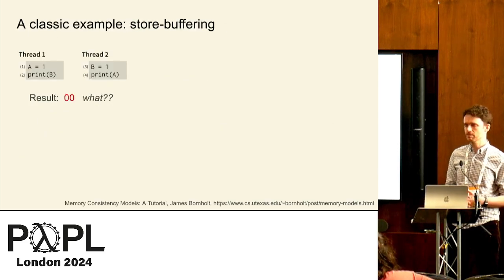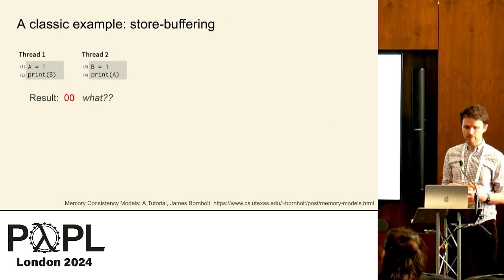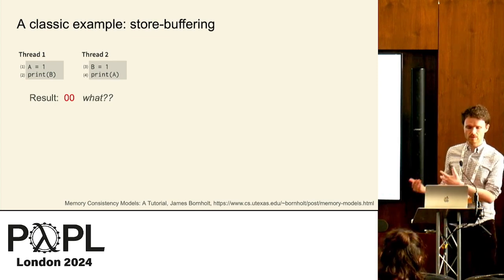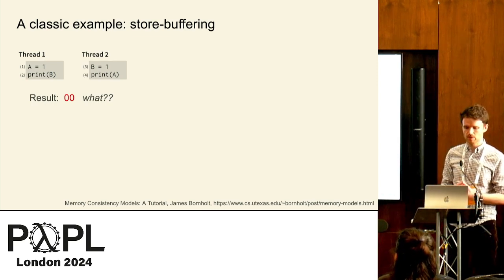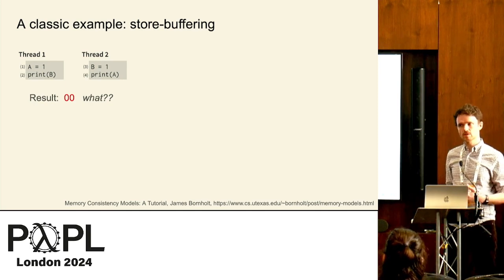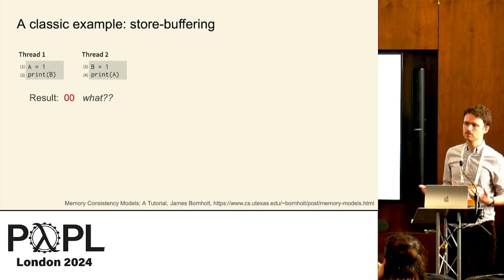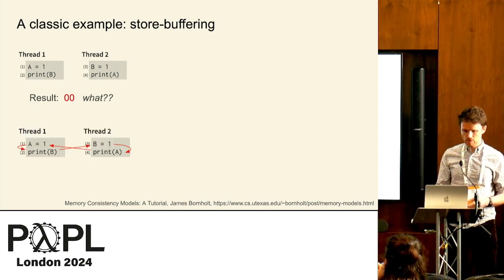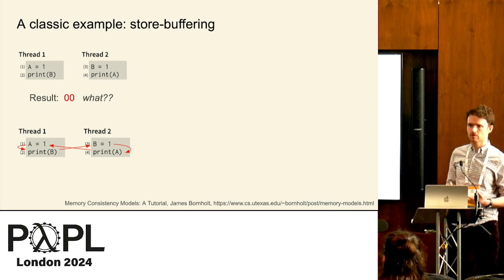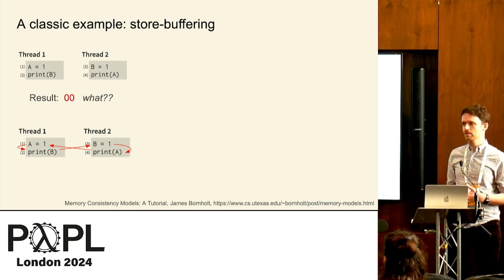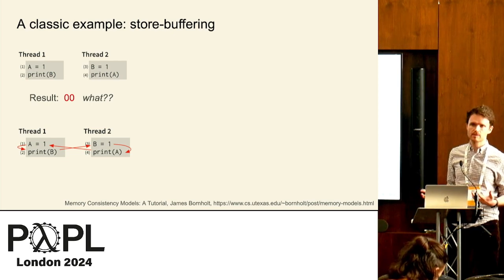Here's a classic example. We have two threads: one writes one to variable A, one writes one to variable B, and you can get the result 0, 0. This seems very surprising. The print of A has to happen before the write of A, the print of B has to happen before the write of B, and things happen in program order — so now we have a cycle in time, which is counterintuitive.